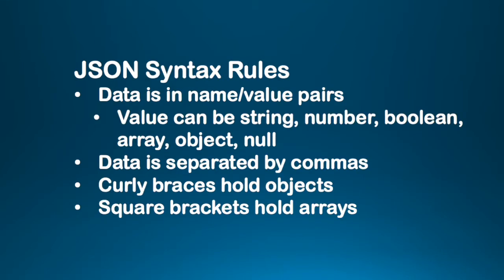What are some of the syntax rules for JSON? Data is in name-value pairs and the value can be any of string, number, boolean, array, object, or null. Data is separated by commas. Curly braces hold objects and square brackets hold arrays. We have already seen that square brackets are used to define arrays and curly braces hold objects. Let's look at a few examples to make these rules and its power clearer.